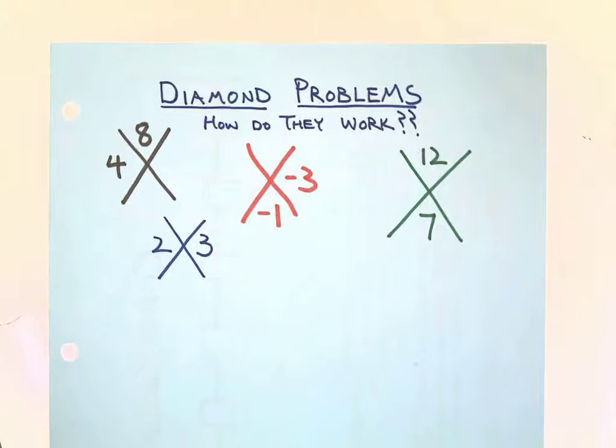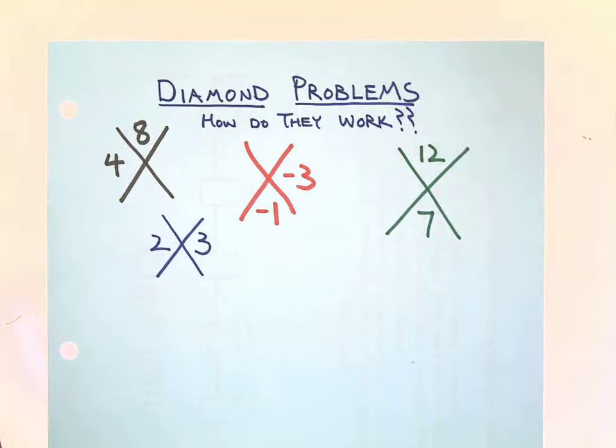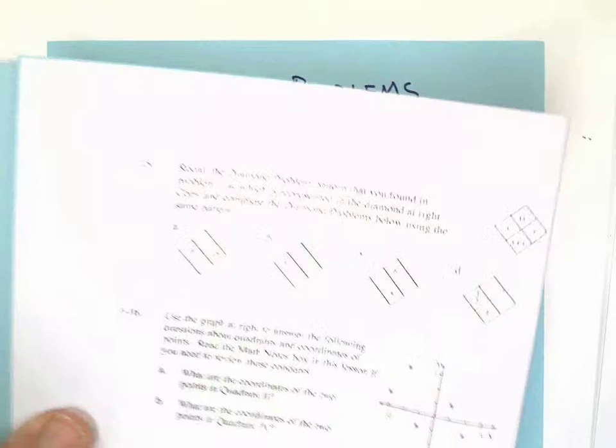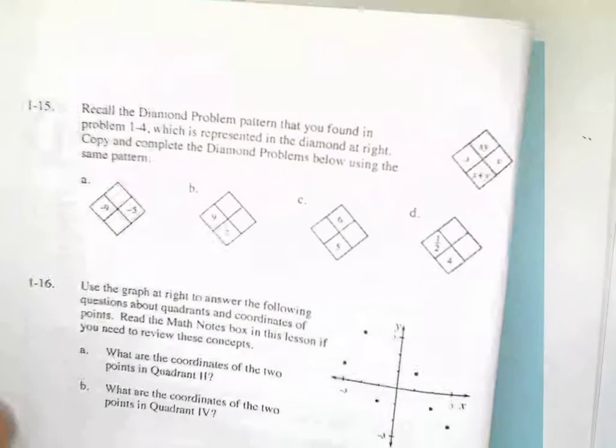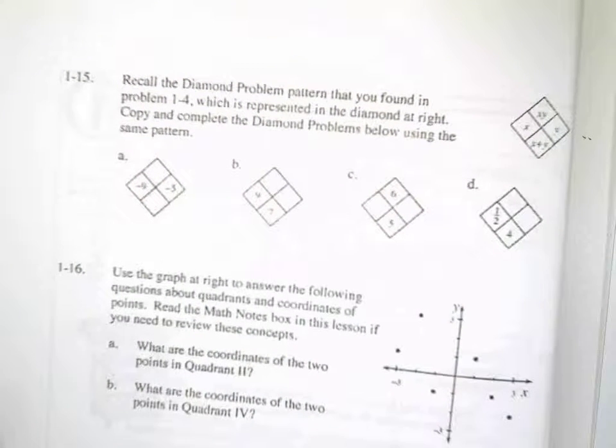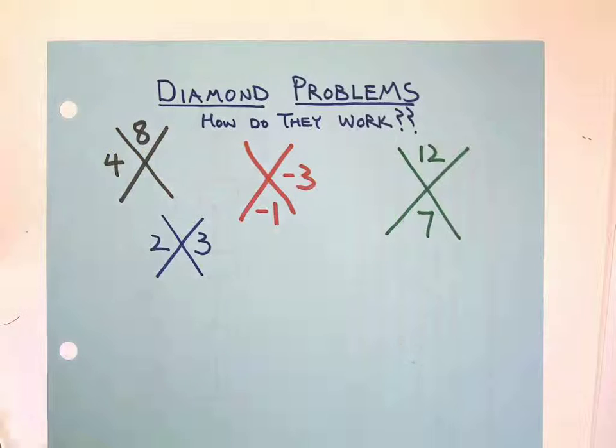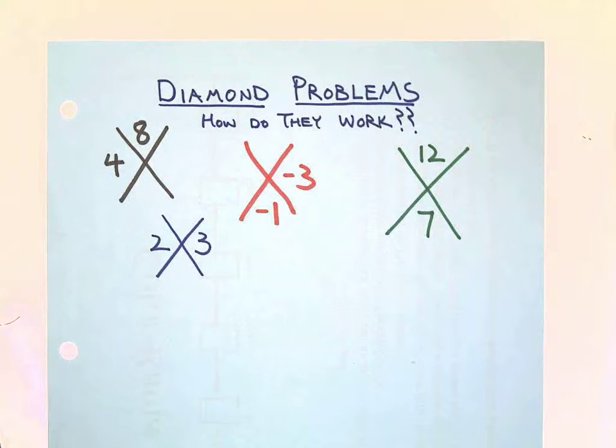Hey, welcome back to Witcher Math. This is the first video of the 2015 school year. I'm super excited. These problems came up in class the other day. A few people forgot how they work, so I thought we should make a video about diamond problems and how they work. They came up in our book. They look like this: you got little diamonds, you got numbers in some of them, and some of them are blank.